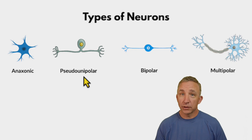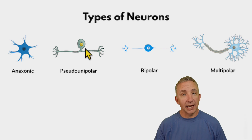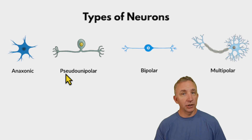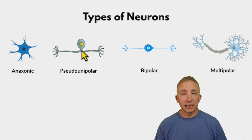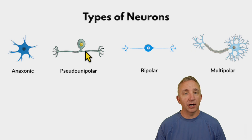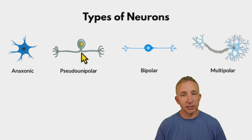Pseudo-unipolar — and some books will still refer to it as unipolar — meaning when I look at it, I have a cell body but then two extensions coming off of it: one part leading to the axon and the other side the dendrites. But we call it pseudo, meaning false, because it looks unipolar. There may be two pieces coming off, but it's just one extension that then splits. That's why we refer to it as pseudo-unipolar.